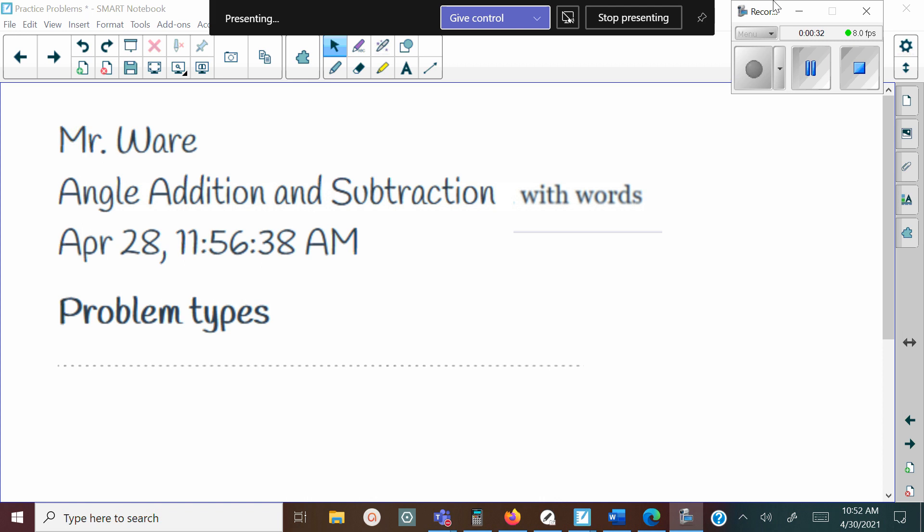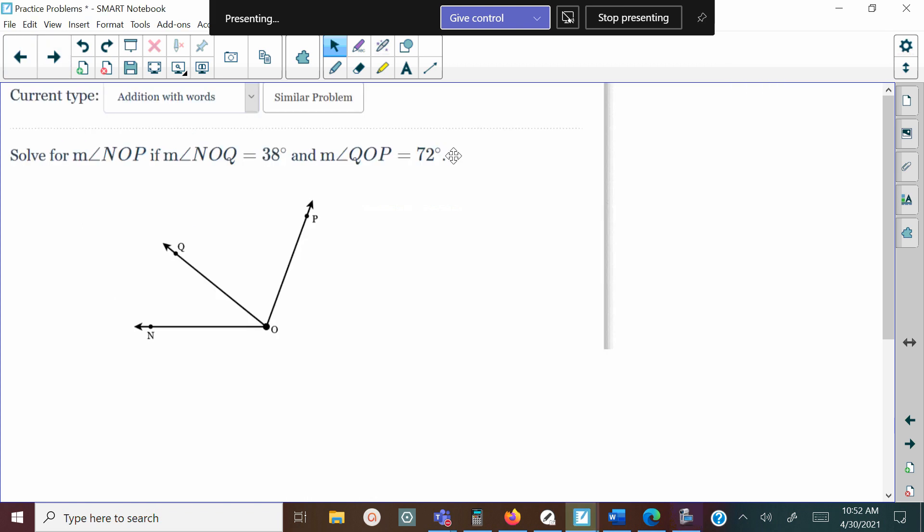Let's take a look at this first example. It says solve for angle NOP if angle NOQ equals 38 and the measurement of angle QOP equals 72. You have to know how to name the angles, and there's three angles here. You got the bigger angle and the two smaller angles. The bigger angle is angle NOP.